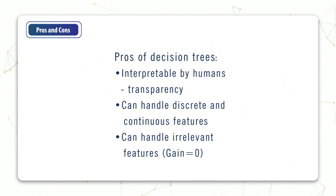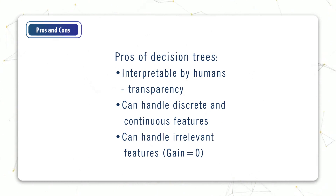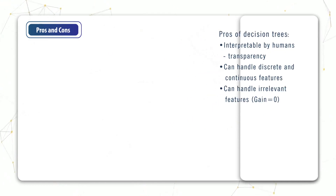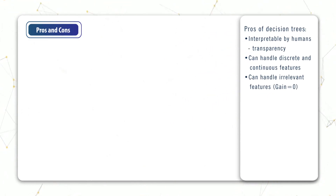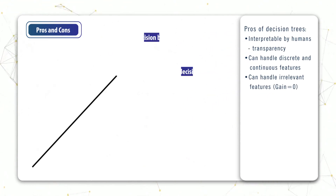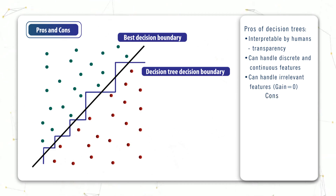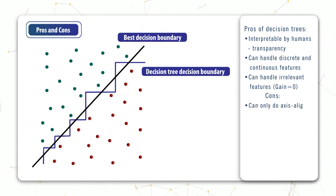However, trees do have some downsides. One big downside is that they can only do axis-aligned splits. Say we have a dataset with only two classes, reds and greens, and the best decision boundary for this data is a diagonal line. A tree isn't going to be able to produce that kind of decision boundary because it can only split along one single feature at a time.